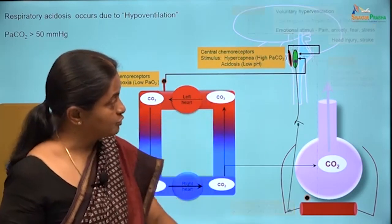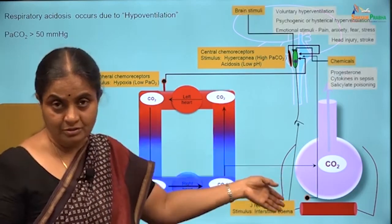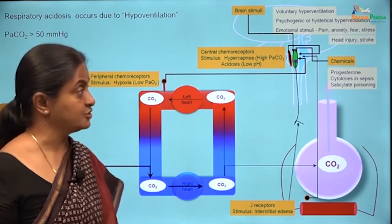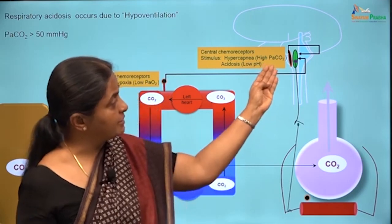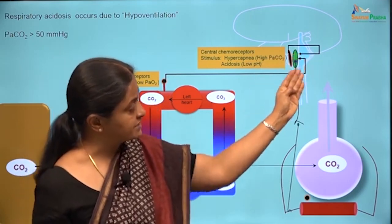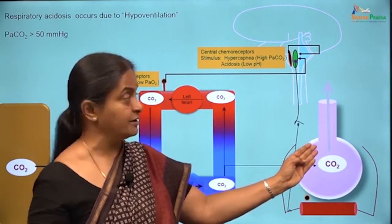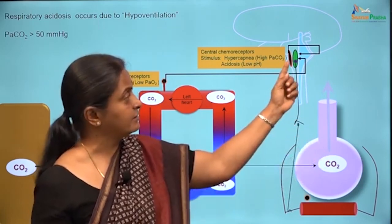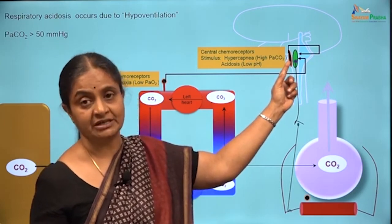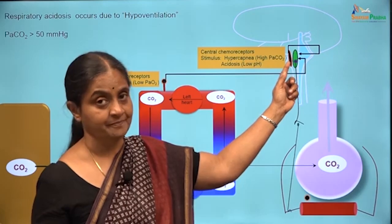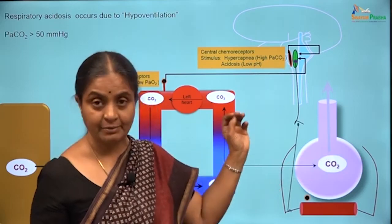Normally, any increase in carbon dioxide will stimulate the respiratory center and adjust ventilation so as to remove the excess carbon dioxide. The set point for the central chemoreceptors is 40 mmHg carbon dioxide in arterial blood. If it goes a little more than that, ventilation will be adjusted to correct the carbon dioxide.